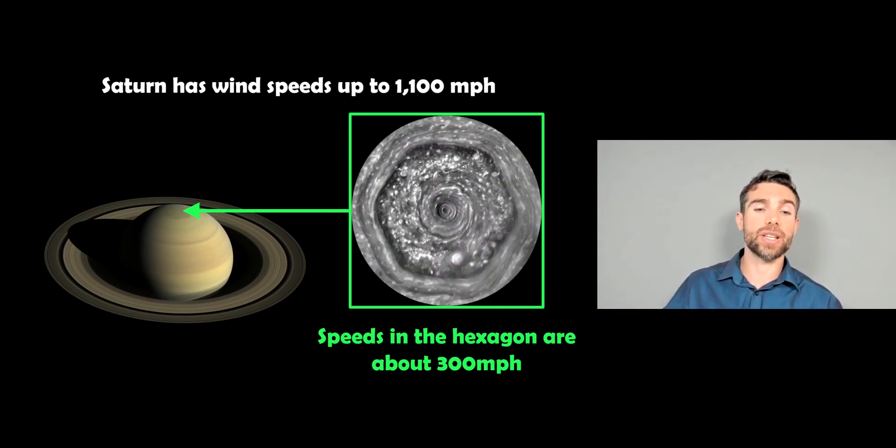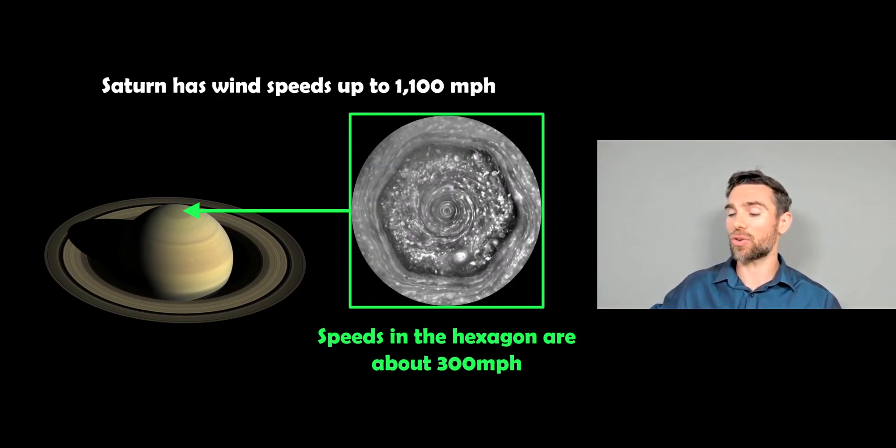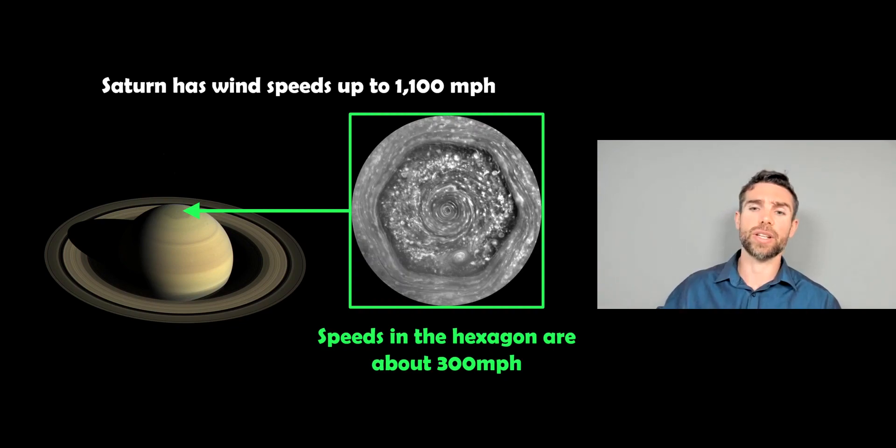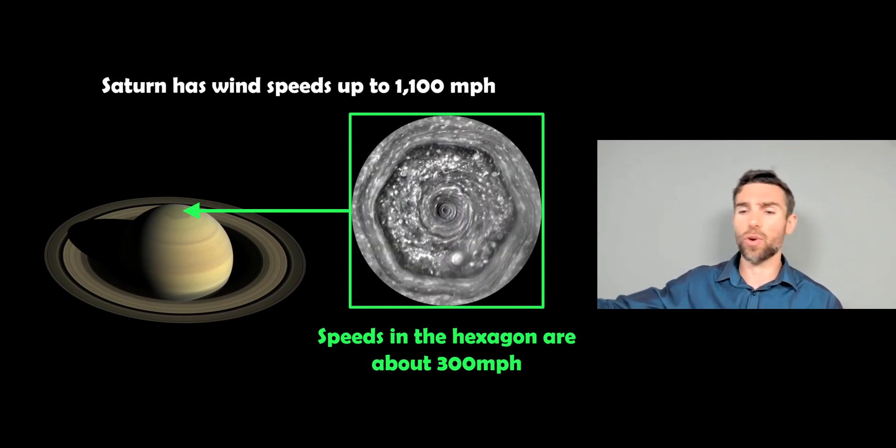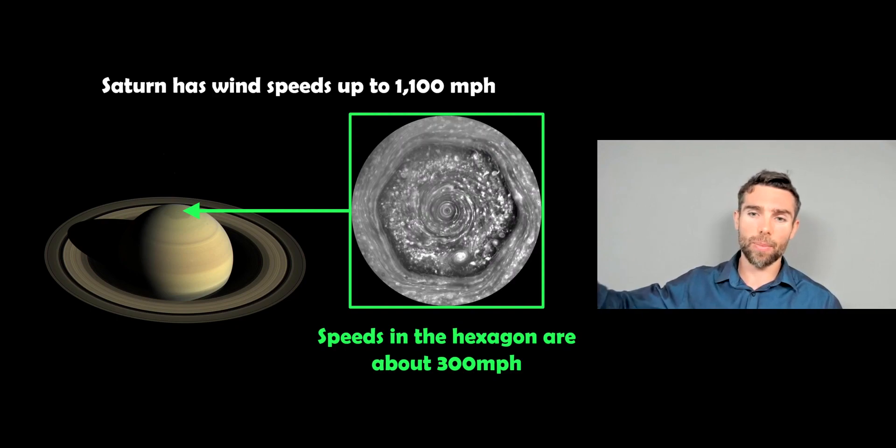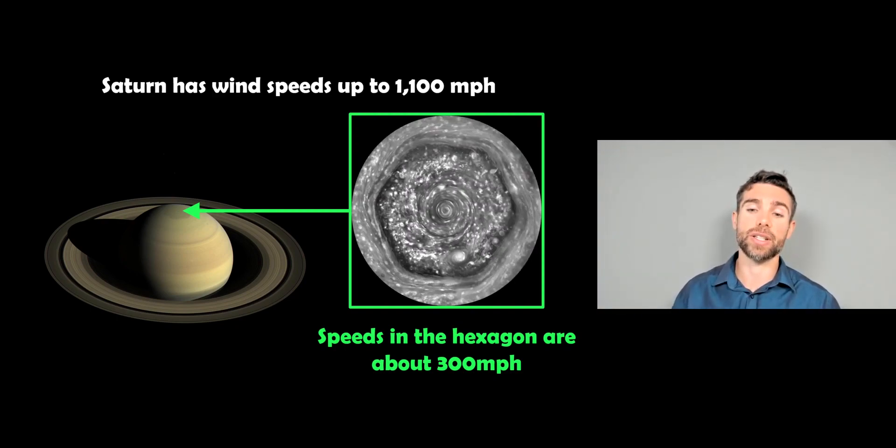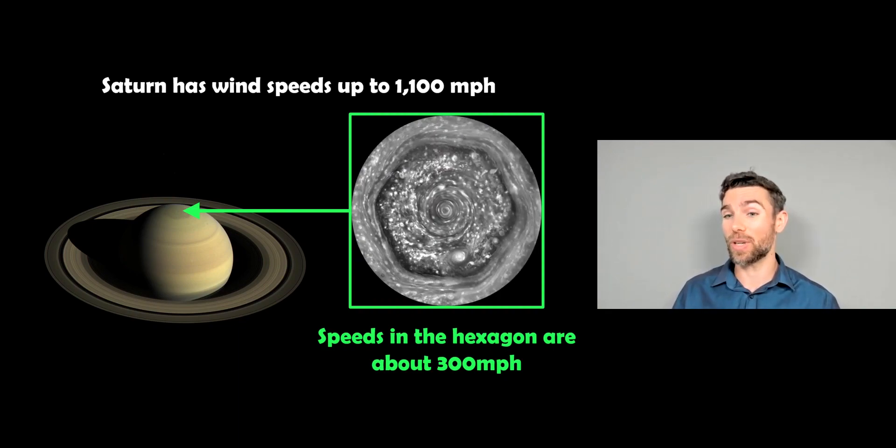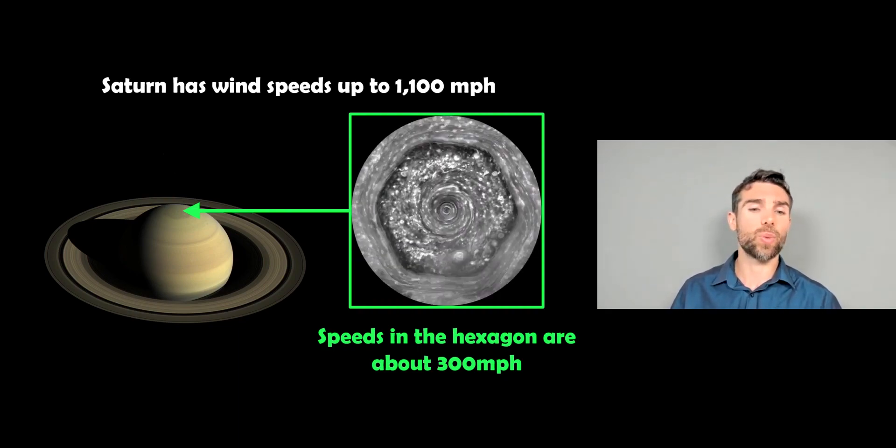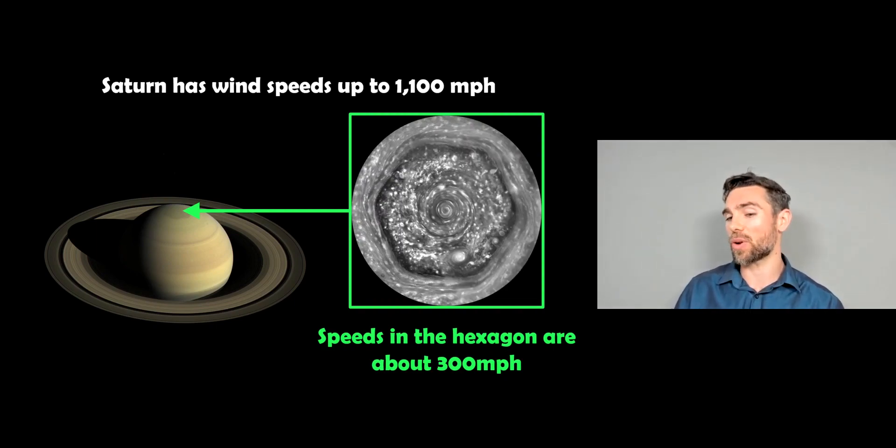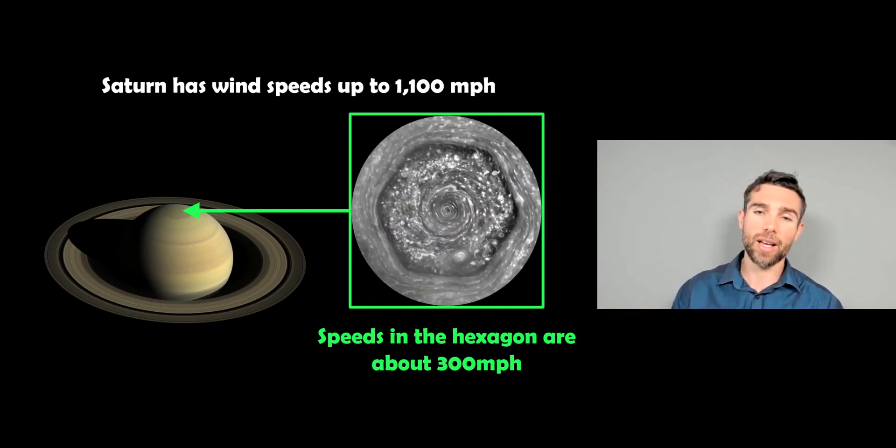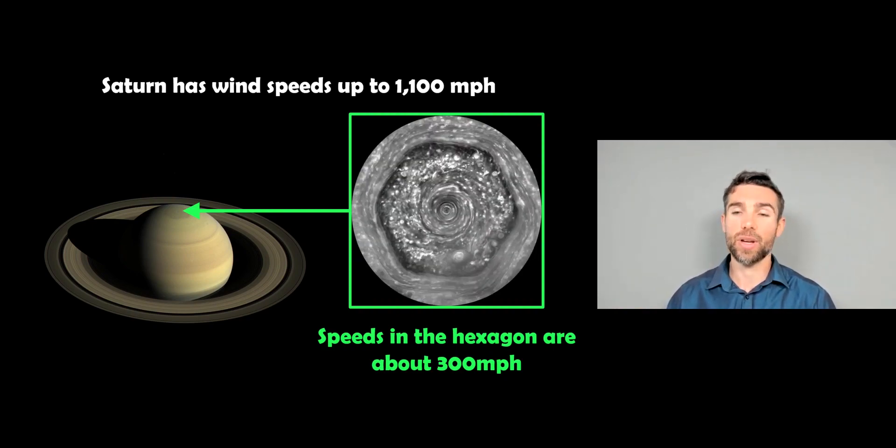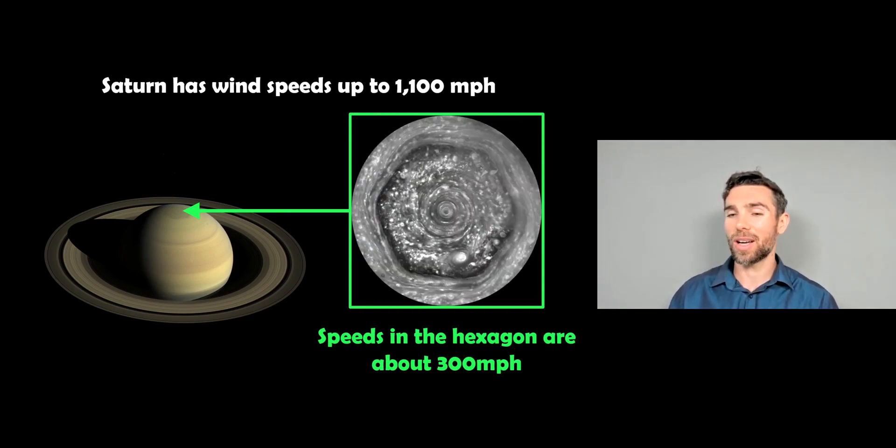But the interesting feature that Saturn has is this hexagon-like structure at one of the poles. It's a long-lived structure that's created due to some of the jet streams. You have some stable vortexes there that create these appearances of straight edges which give the hexagon structure. It's been there for decades that we know about at least. Wind speeds in and around that hexagon are around about 300 miles per hour. But it's elsewhere you're getting the 1,100 miles per hour on the planet. So we've got 1,100 so far. That's pretty high.